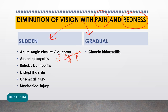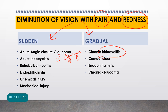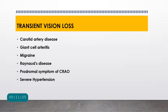Gradual causes of diminution of vision with pain and redness include chronic uveitis (chronic iridocyclitis), corneal ulcers — bacterial, fungal, or viral — endophthalmitis, and chronic glaucoma.